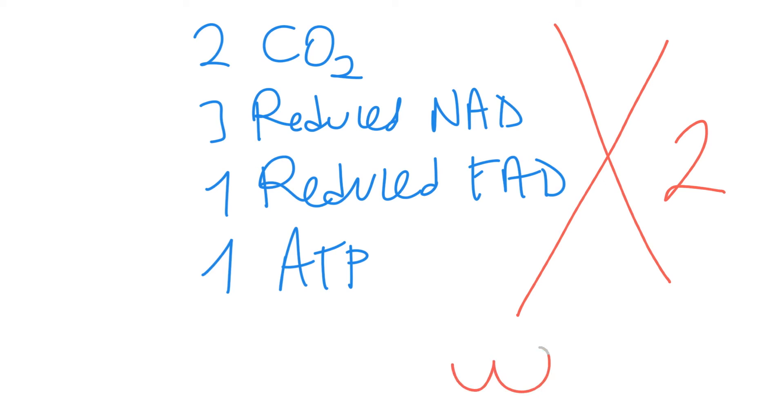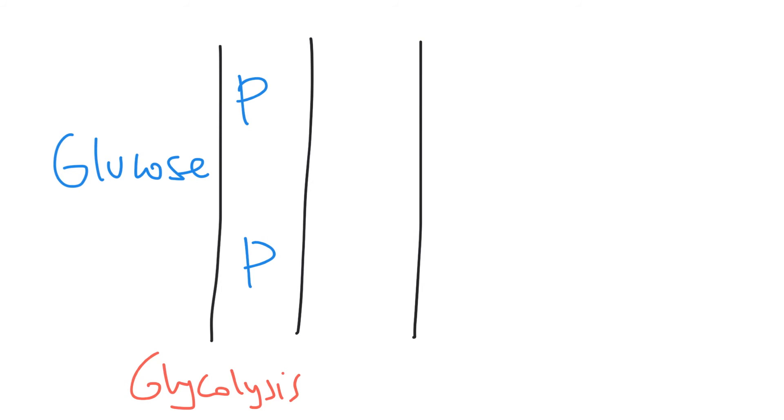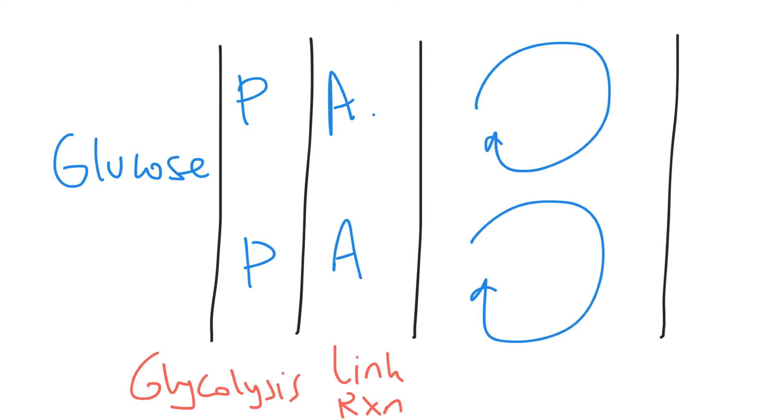But why? Our starting point is one glucose molecule. And in glycolysis, 2 pyruvate are formed. Pyruvate, pyruvate. And then in link reaction, 2 acetyl-CoA. And then in Krebs cycle, 2 Krebs cycles. For one glucose molecule, 2 pyruvate, 2 acetyl-CoA, and 2 Krebs cycles are running. Okay, let's check out the past paper question about Krebs cycle.